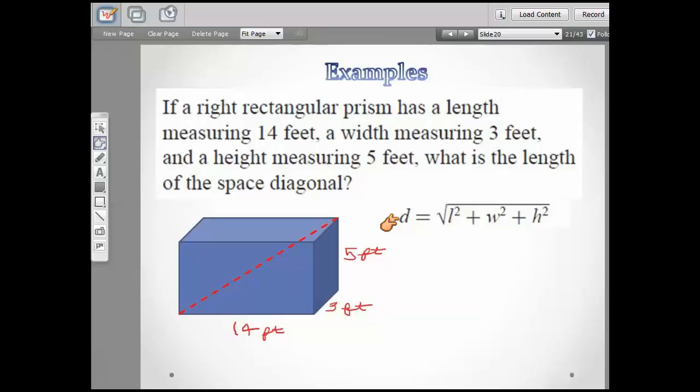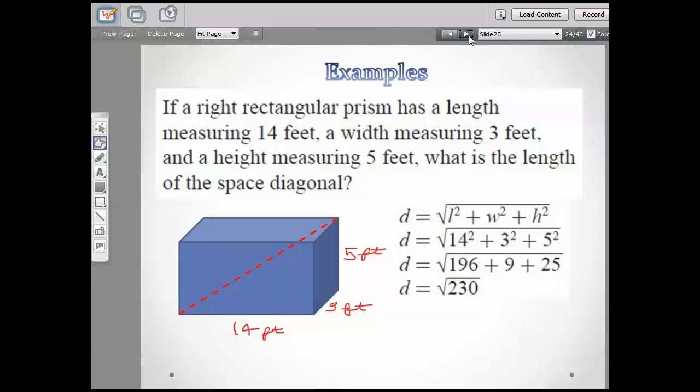You're going to take your length squared plus your width squared plus your height squared, and then you're going to find the square root of that sum. So first we're just going to plug in our numbers for the length, width, and height. And then we're going to square each one of them. So 14 squared is 196, 3 squared is 9, 5 squared is 25.